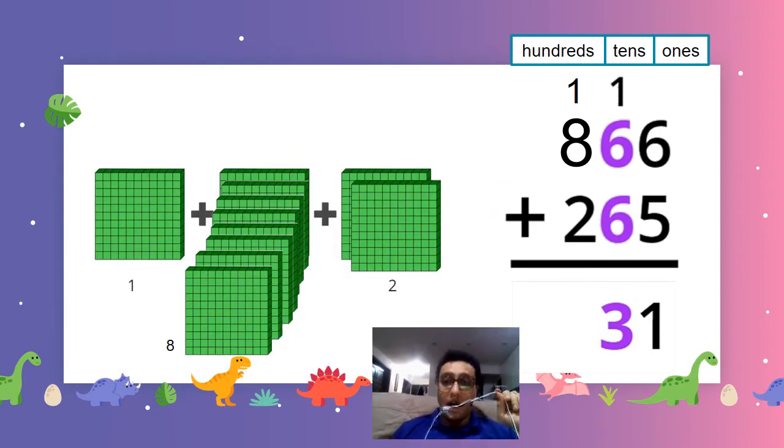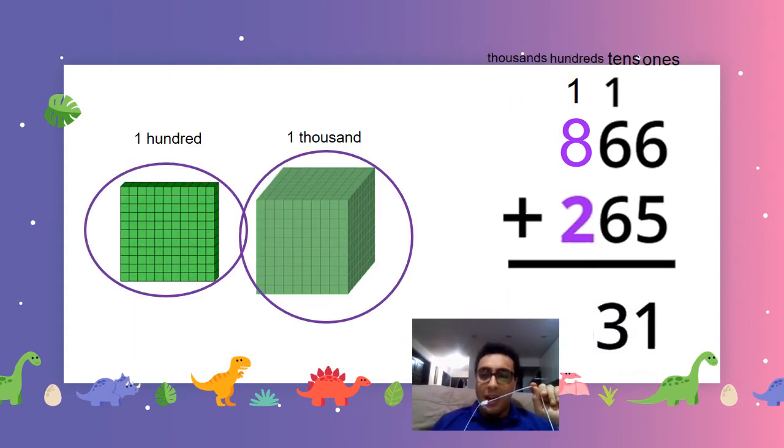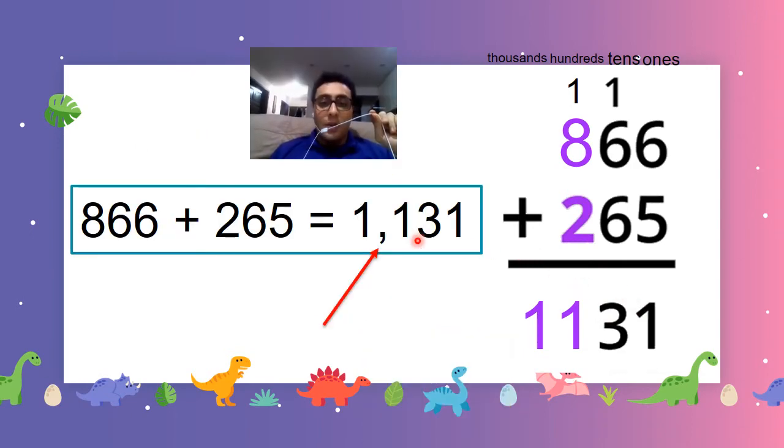Now we have to do hundreds. 1 plus 8 plus 2. Super easy. 11. Now we don't have any number to give it to, right? So we say 1,000 and 100. Now what do we do with this? We write it in the correct column. See? This is hundreds. This is thousands. So, 1,131. Now when you write it, don't forget to write comma right here between 1,000 and 100. So, 866 plus 265 equals 1,131. Ha! Good job.